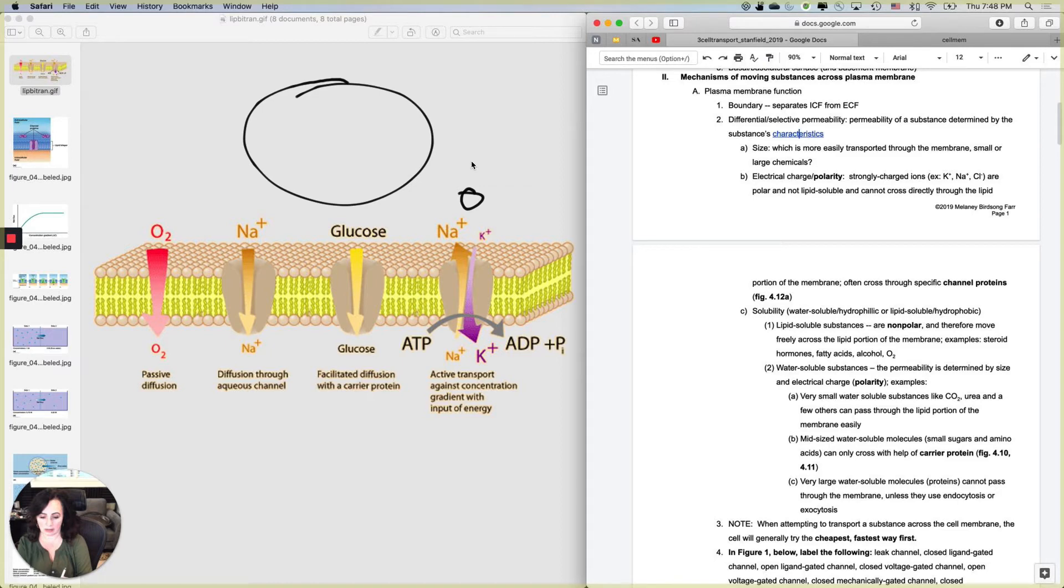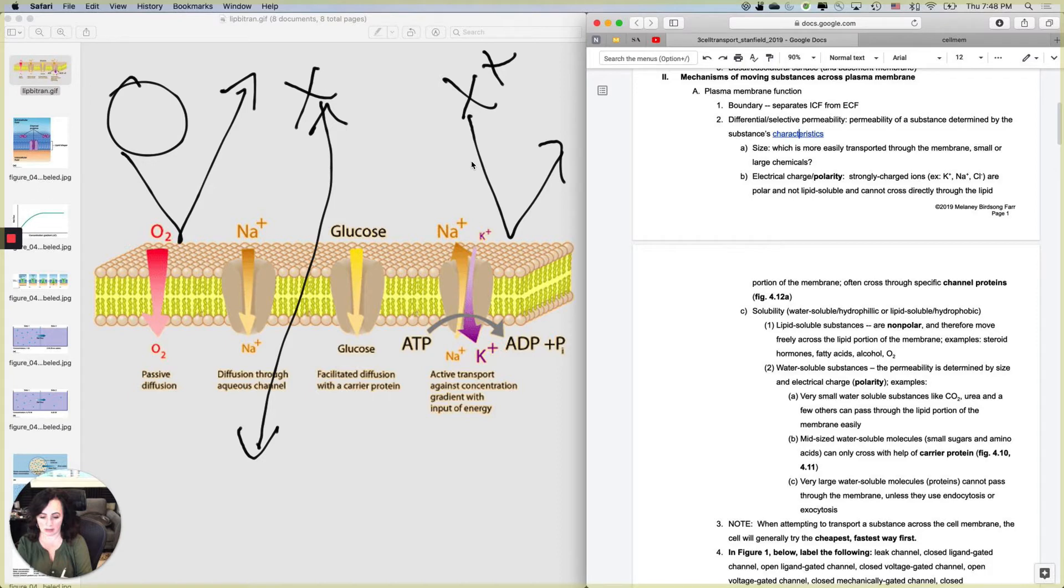The next thing you have to consider is polarity. The big thing is going to have a hard time getting across. How about charged things? If something is uncharged, it's just X versus X plus. X is going to have an easier time getting in and out than X plus, and that is because charged things like ions are polar and therefore not lipid soluble. What is most of this thing made of? It's made of lipid. So if you have a hard time getting through lipids, you're going to have a hard time getting through the cell membrane.